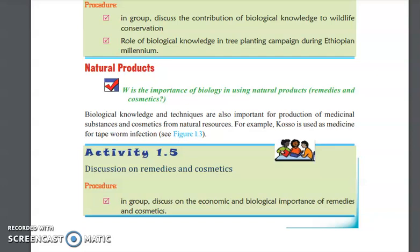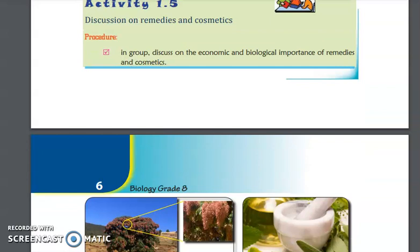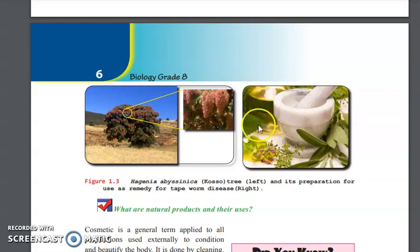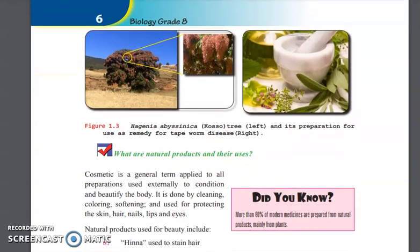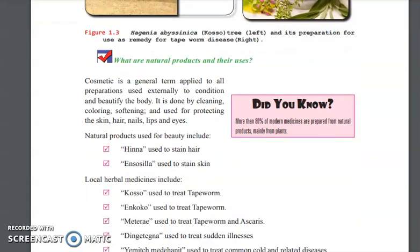Let's look at koso. Koso is a natural remedy and medicine. This is what it looks like. It has a scientific name, Hagenia abyssinica.